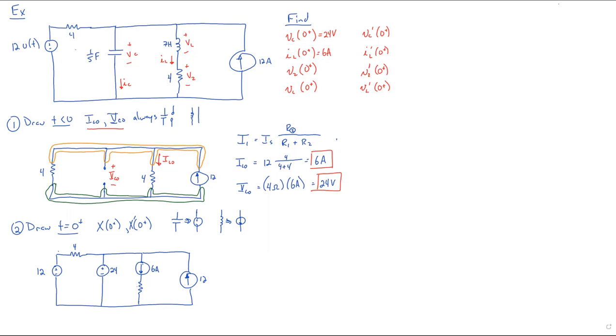Now, at this point, normally, we would just draw a single thing we want to find. If we're asked to find Vl and Vl prime, for instance, we would have to draw our Vl right there.